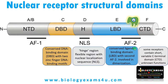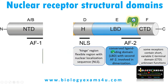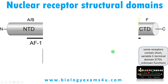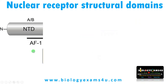Now let us understand nuclear receptor structural domains. Nuclear receptors share a basic structure of 4 to 5 domains. As you can see, these are the AB domain, then the C domain, D, E, and F domains. Let us understand each domain one by one.